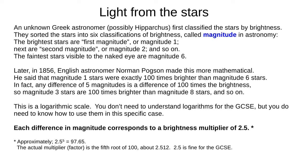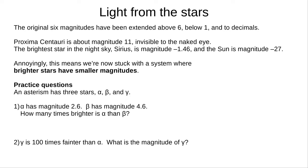The maths tells us that a magnitude difference of one corresponds to a brightness multiplier of 2.5. Learn these key facts. Lower magnitudes are brighter, a magnitude five lower is 100 times brighter, and a magnitude one lower is 2.5 times brighter. Pogson's system lets us use magnitudes above six, below one, and decimals. For example, Proxima Centauri is magnitude 11, invisible to the naked eye. Sirius, the brightest star in the night sky, is magnitude minus 1.46, and the Sun is magnitude minus 27. But this does mean we're stuck using smaller magnitudes for brighter stars.